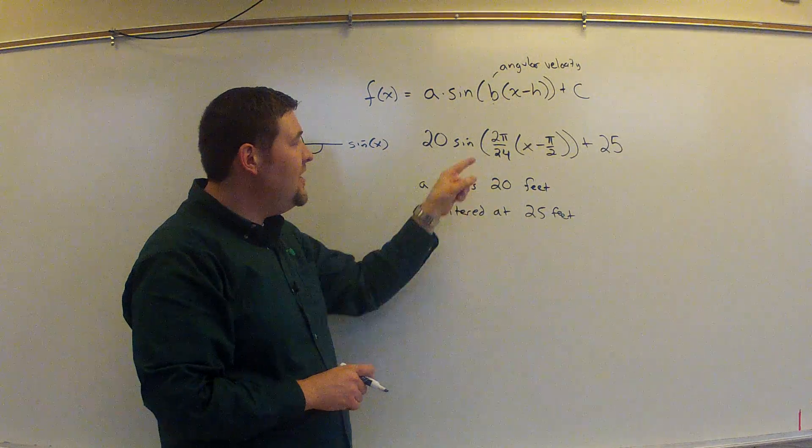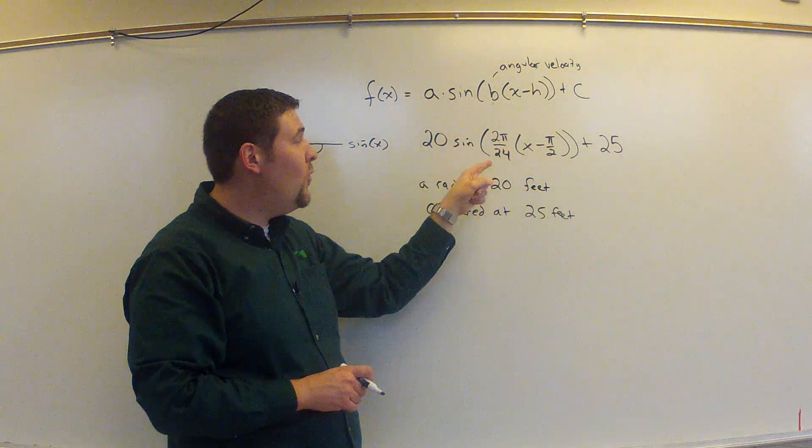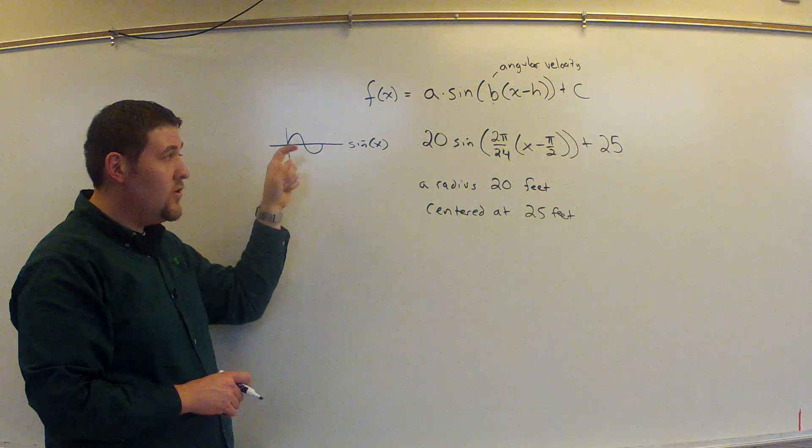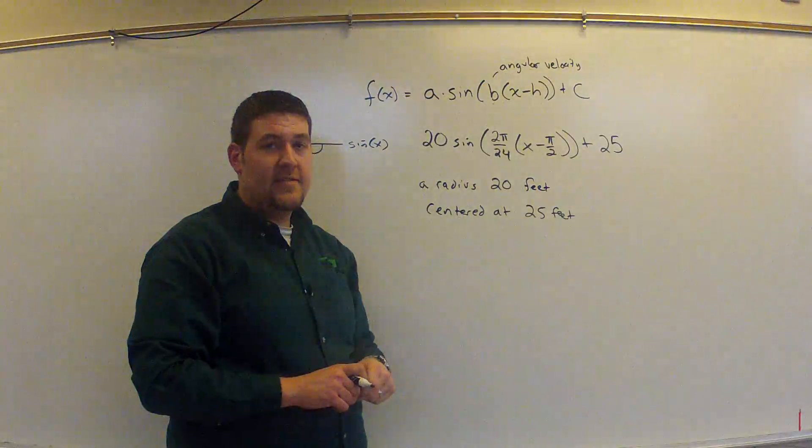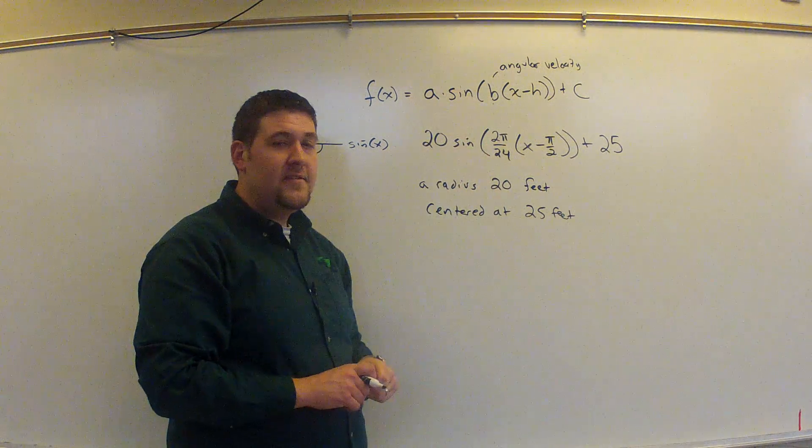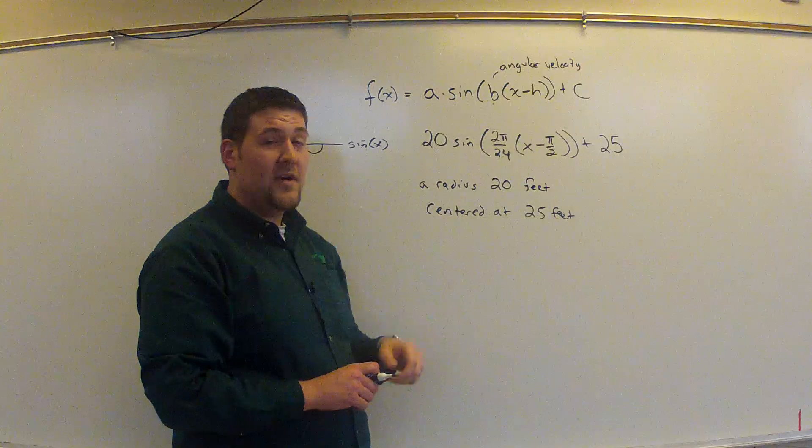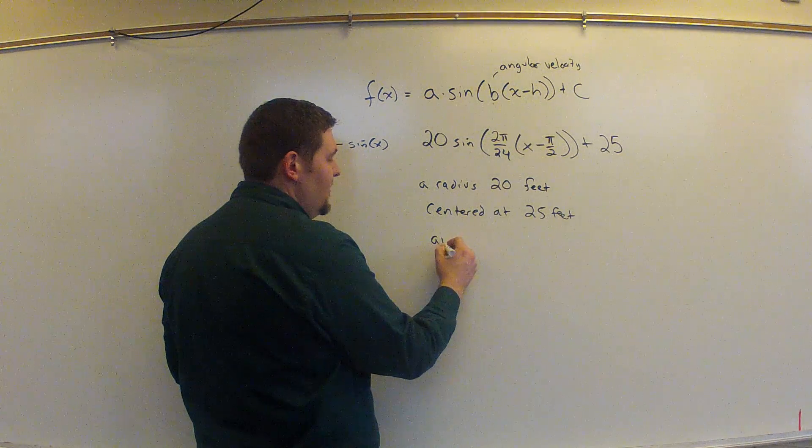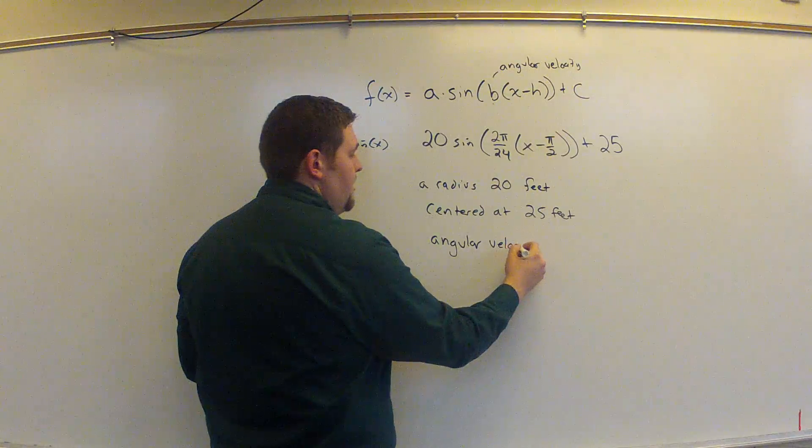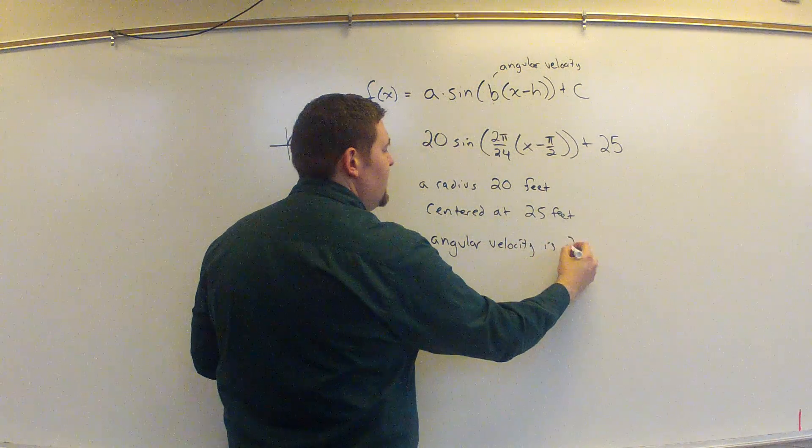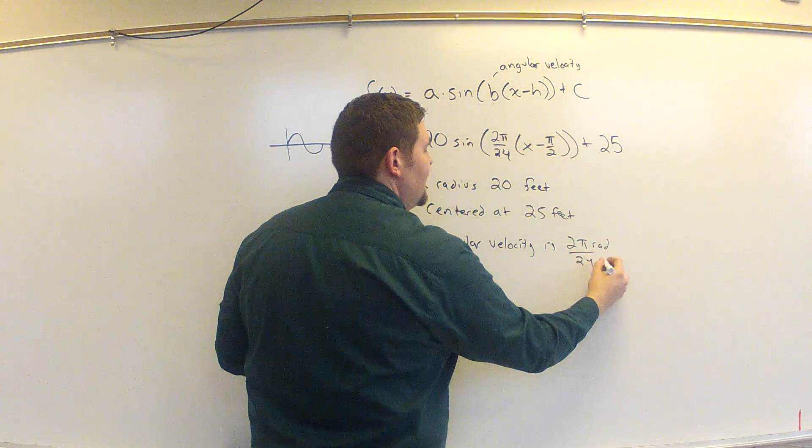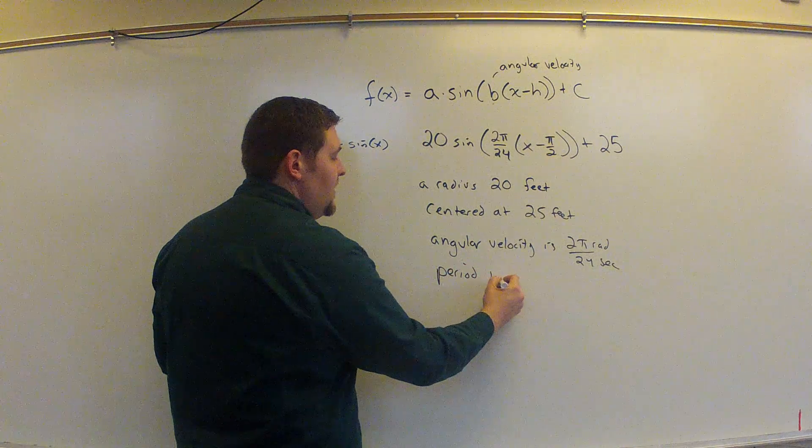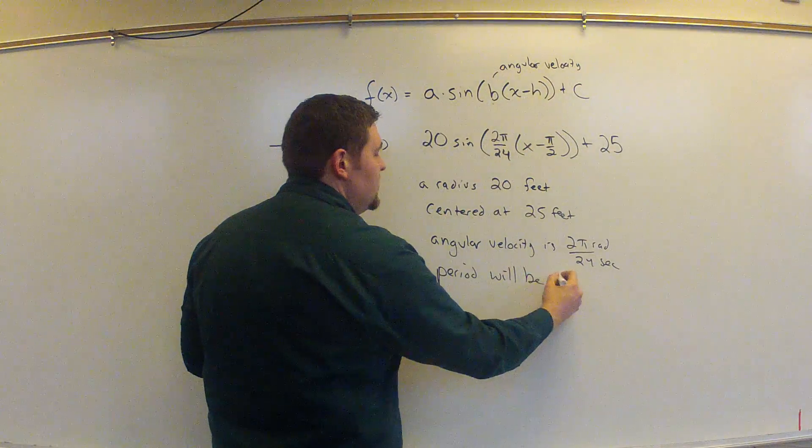What that's telling us is that we can go 2π radians every 24 seconds. 2π radians is a full circle. It's like completing a full circle or full cycle. That happens in 24 seconds. So this information also tells us right now that there is a period of 24 seconds. So I'm going to write down that the angular velocity is 2π radians per 24 seconds. But from that, I also know that the period of the function will be 24 seconds.